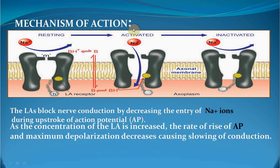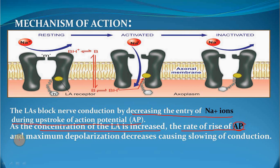Mechanism of action — this is very important. Local anesthesia blocks nerve conduction by decreasing the entry of sodium ions during the upstroke of the action potential. As the concentration of local anesthesia is increased, the rate of rise in the action potential and the maximum depolarization both decrease, causing slowing of conduction. Therefore, the local depolarization fails to reach the threshold potential and conduction is blocked.